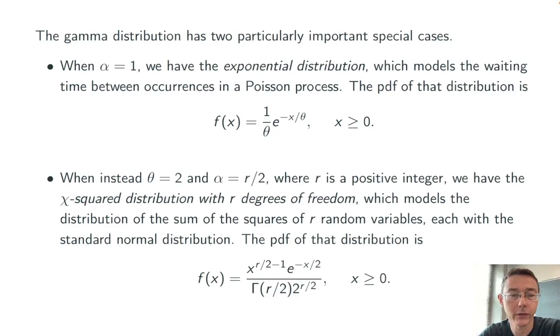The other important special case is when theta is equal to 2 and alpha is equal to r over 2, where r is just some positive integer. And this is called the chi-squared distribution with r degrees of freedom, which also comes up all the time in probability theory and practice. It comes up all the time because it models the sum of the squares of r random variables, each of which has a standard normal distribution. Once again, we can take that PDF for the gamma function, plug in those stated values, and simplify to get the PDF for the chi-squared distribution.